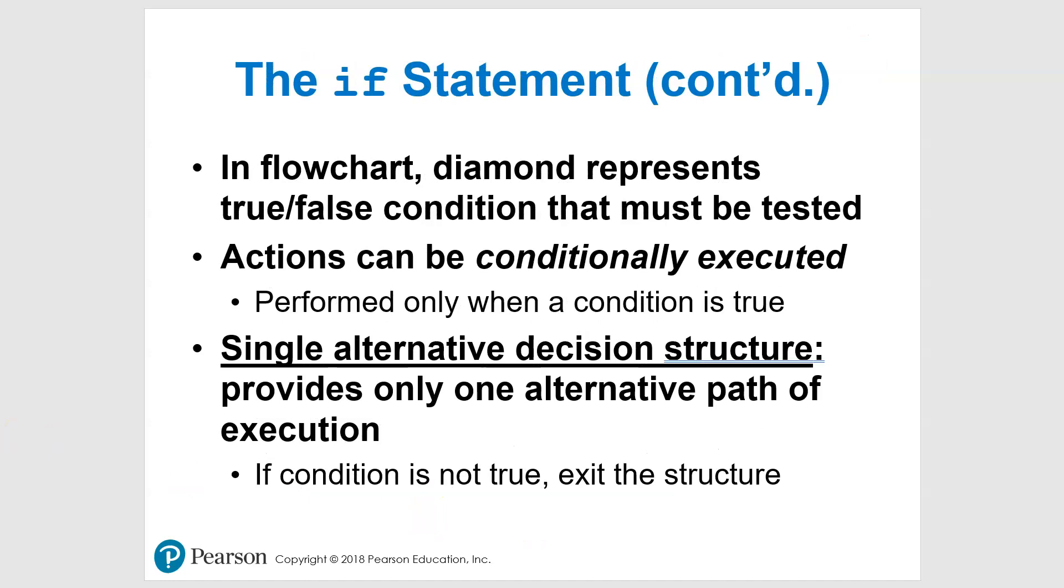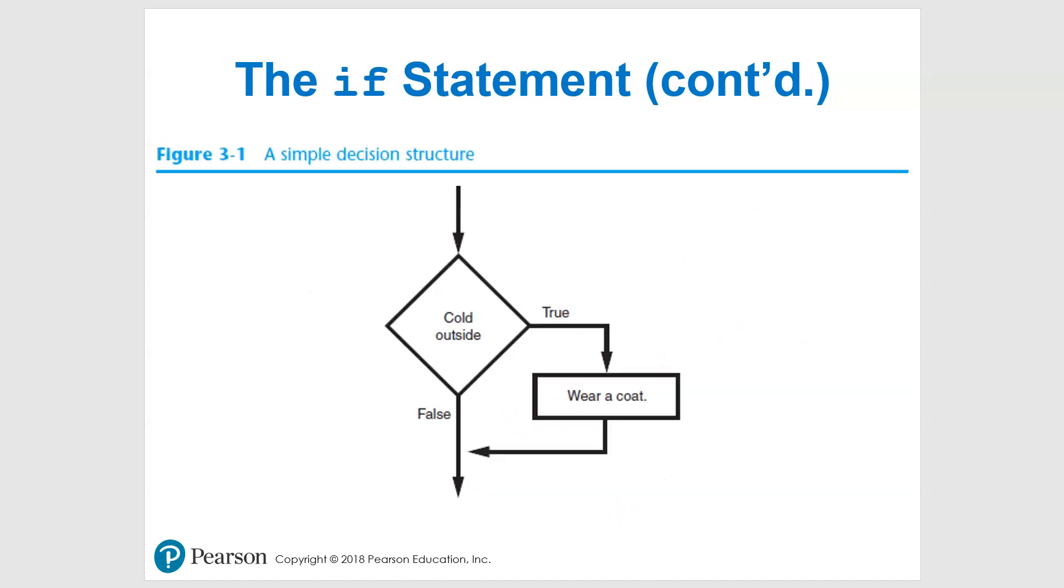So we're going to take a look at a flowchart in a second. In a flowchart, diamond represents our Boolean, so it's a true-false condition that must be tested. So we're testing these conditions. And as it's being executed, it will check the condition and it will only happen when it's true. So out of this single alternative decision structure, we have one path on here. If it's not true, boom, you're out of there. So let's look at an example of that.